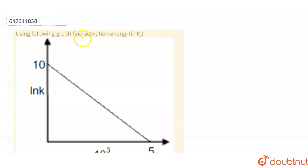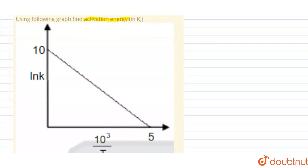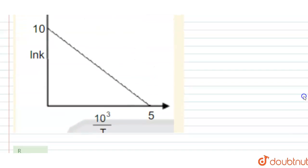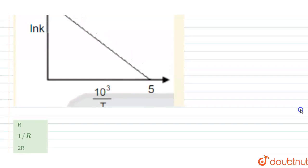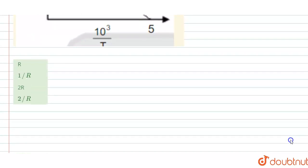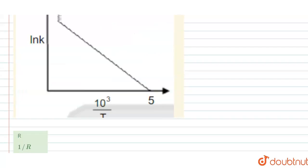Hello students. The question says: using the following graph, find the activation energy in kilojoules. We have a graph between ln K versus 10³/T. It is a straight line with a negative slope. The options are: option A is R, option B is 1/R, option C is 2R, and option D is 2/R.